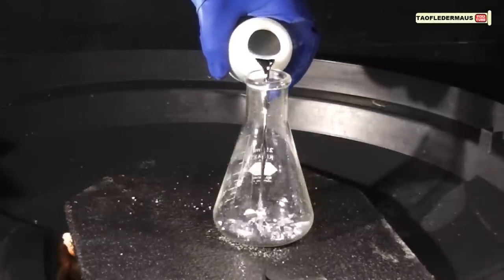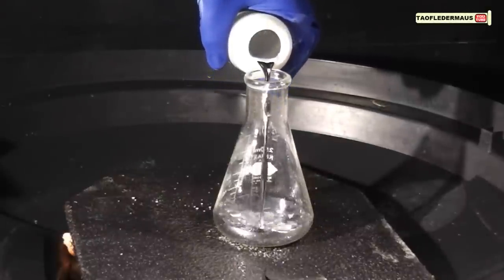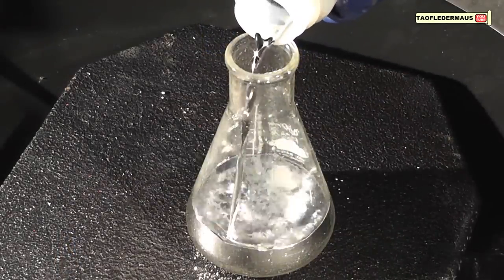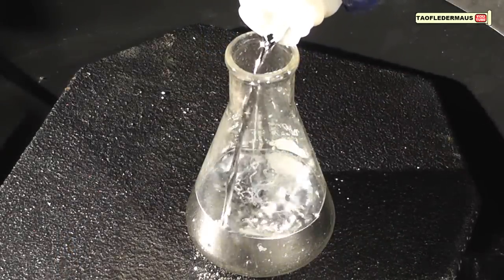In order to do this, I had to purchase a Pyrex flask on eBay, and we're pouring five pounds of mercury in it right now, which is 2.2 kilos.